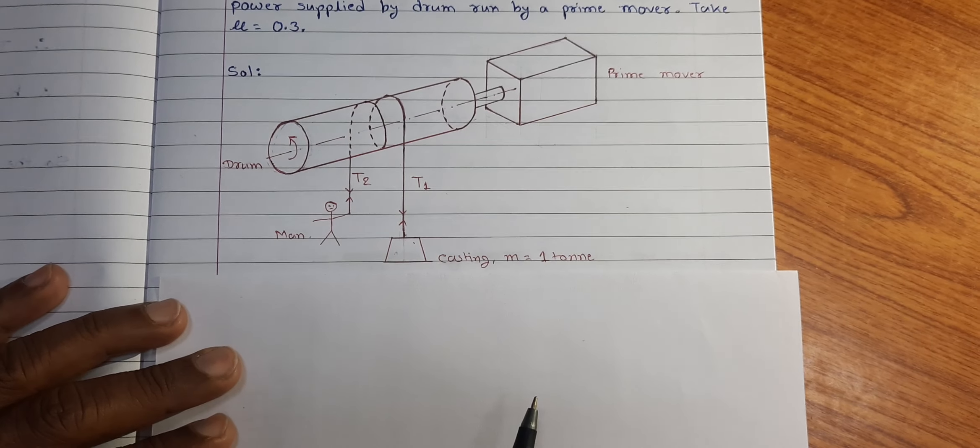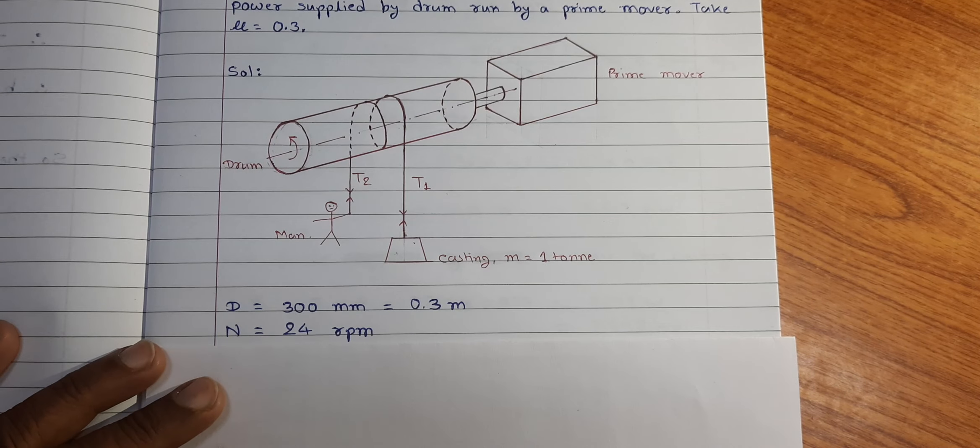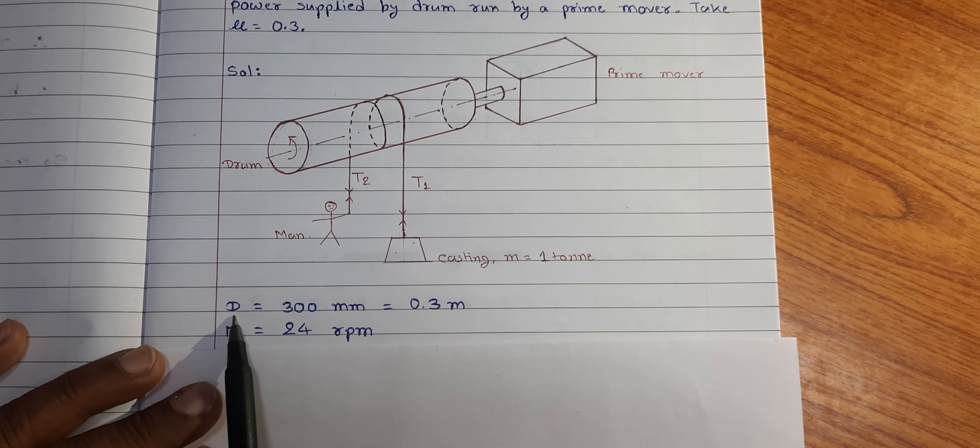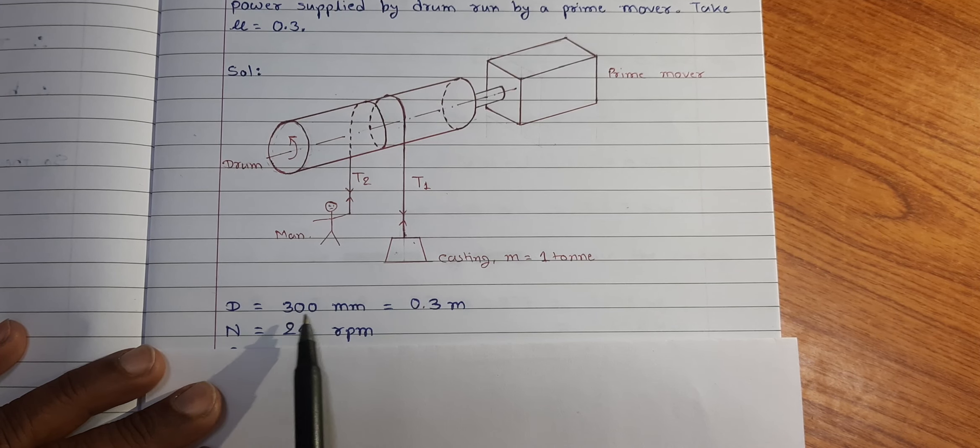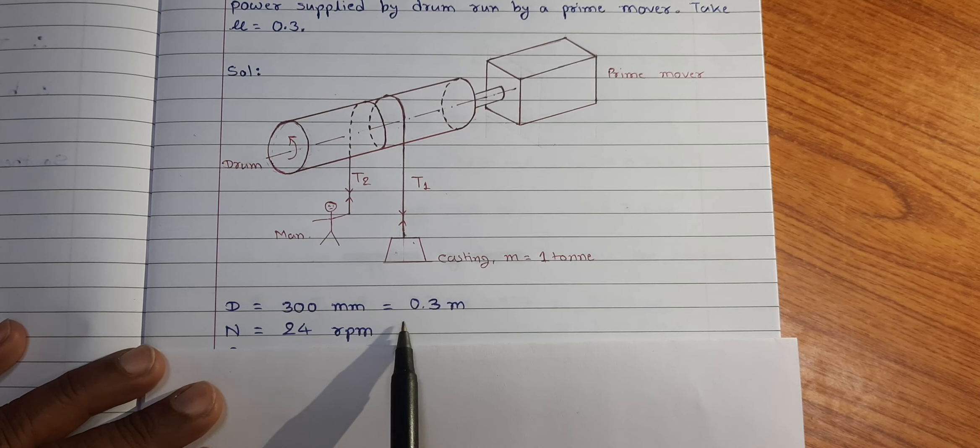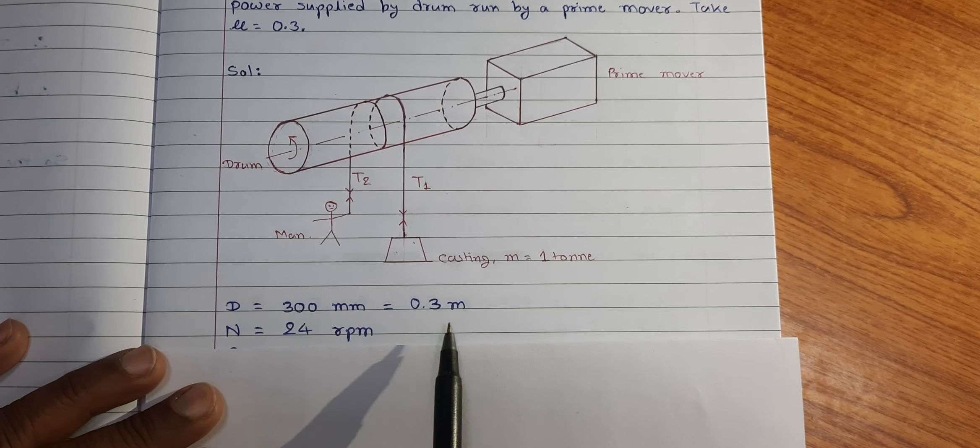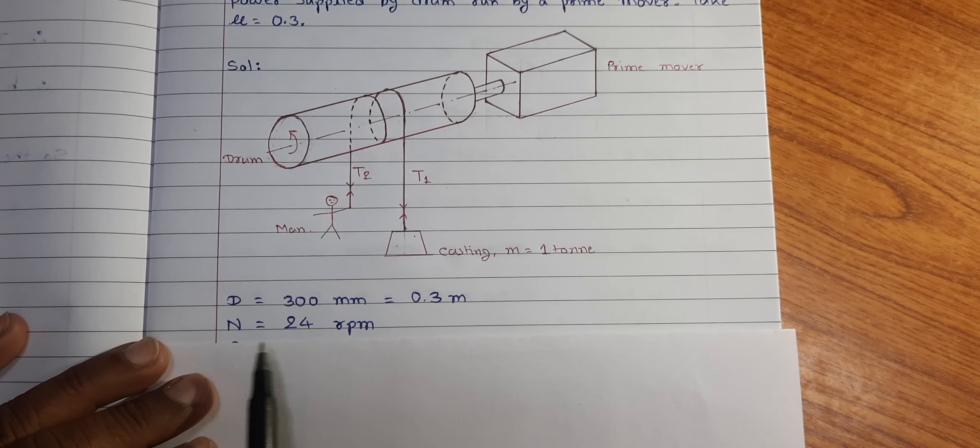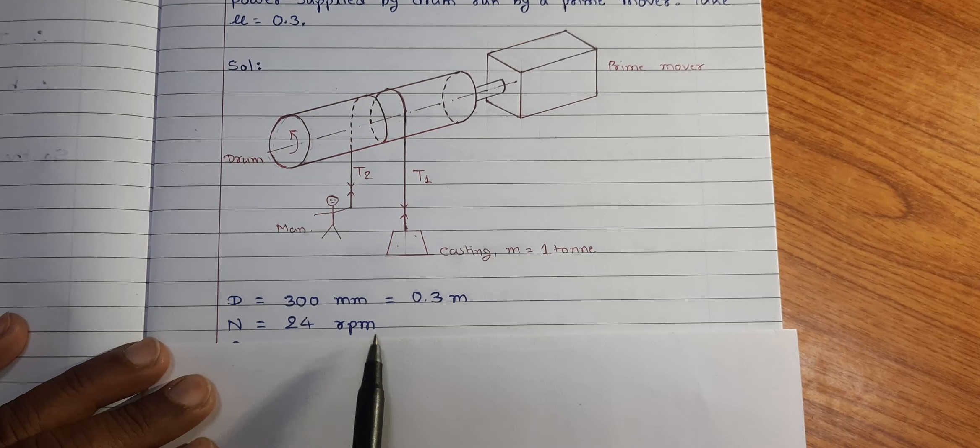The data given related to this are that the diameter of the drum is given 300 mm that is 0.3 meter. The drum is rotating at speed n is equal to 24 rpm.